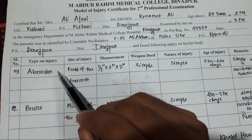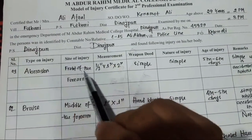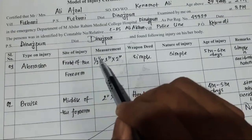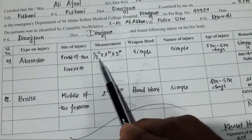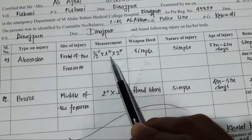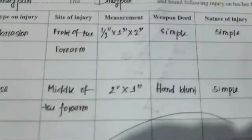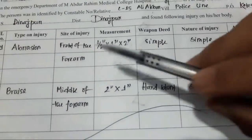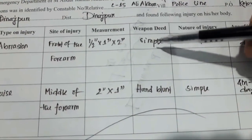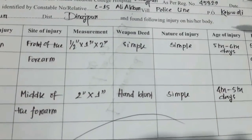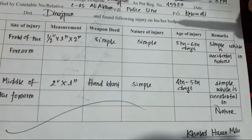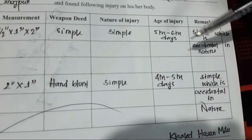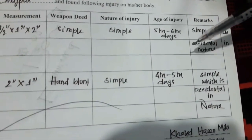When we have an abrasion, we record the site of injury — for example, front of the forearm. The injury measurement includes the type of injury, length, breadth, and depth. The nature of injury is described as simple, and accidental in nature.